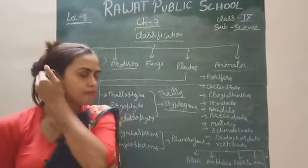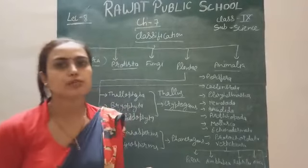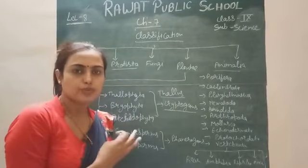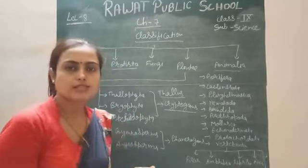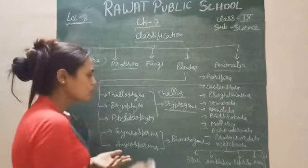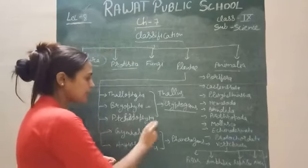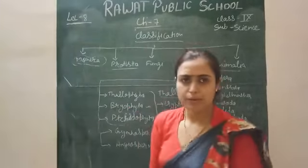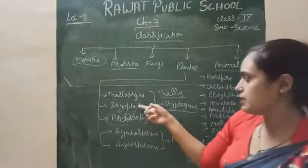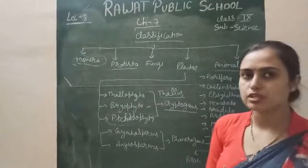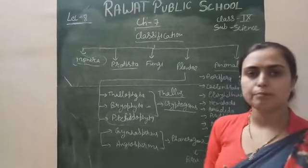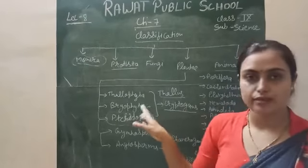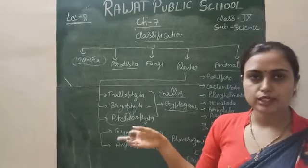Bryophyta are called the amphibians of the plant kingdom because they have the capability to survive in both aquatic and terrestrial areas. Pteridophyta have vascular bundles but not completely; they are more developed than Bryophyta and are completely terrestrial. All three — Thallophyta, Bryophyta, and Pteridophyta — do not produce seeds and fruit; they divide by spores only.